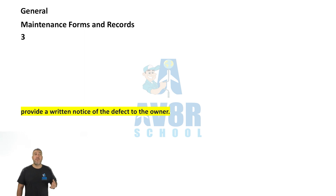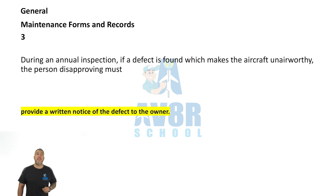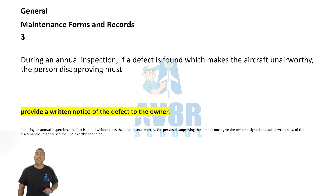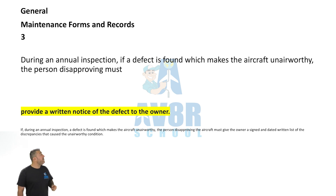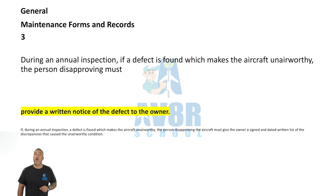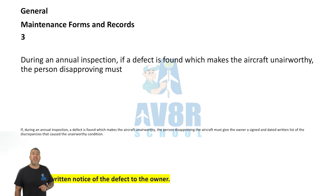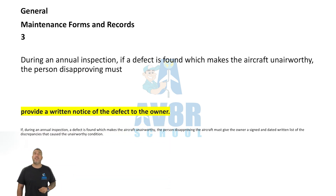Number three: During an annual inspection, if a defect is found which makes the aircraft unairworthy, the person disapproving must provide a written notice of the defect to the owner.